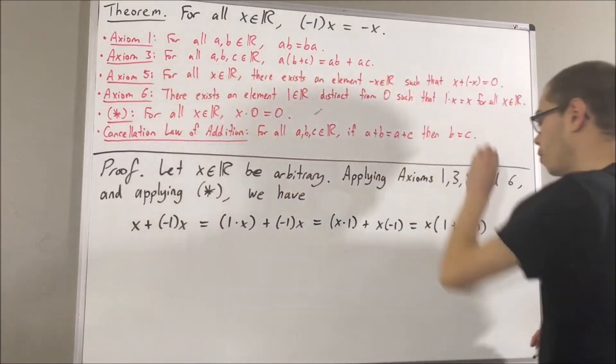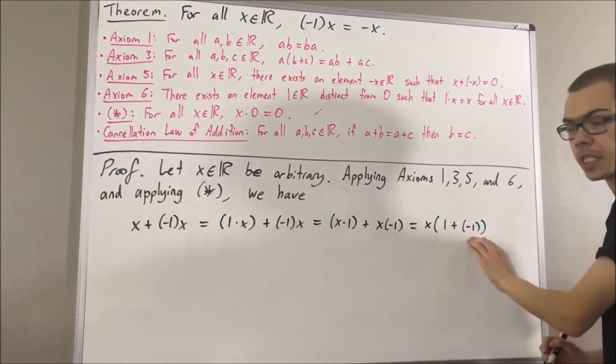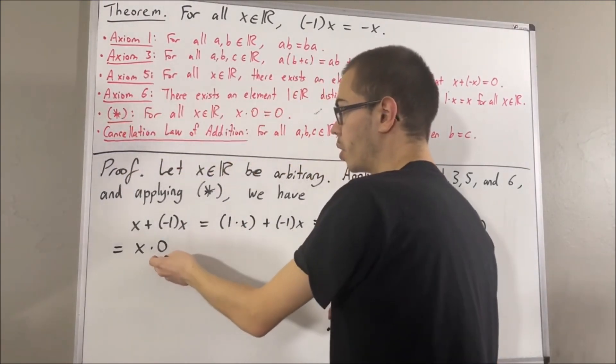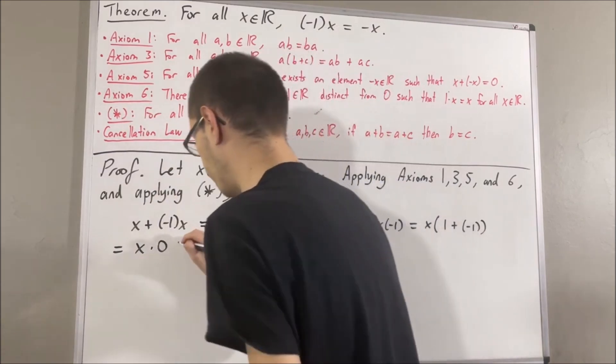But by axiom 5, we know that 1 plus negative 1 is equal to 0. So we have x times 0, but by star, we know that x times 0 is equal to 0.